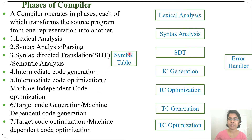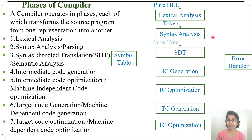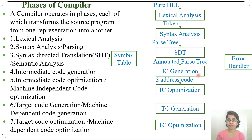Lexical analysis takes pure high level language as input and produces tokens. Syntax analysis takes tokens as input and produces a parse tree. Syntax directed translation converts it into an annotated parse tree. Intermediate code generation produces three address code. Intermediate code optimization optimizes this three address code, and target code generation generates assembly language from the three address code. Target code optimization then optimizes the assembly language.